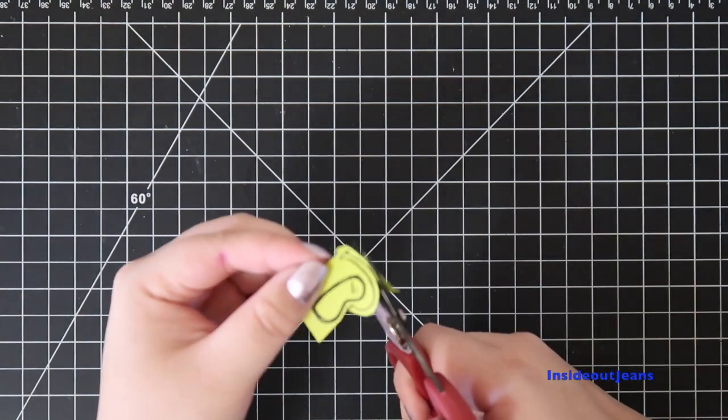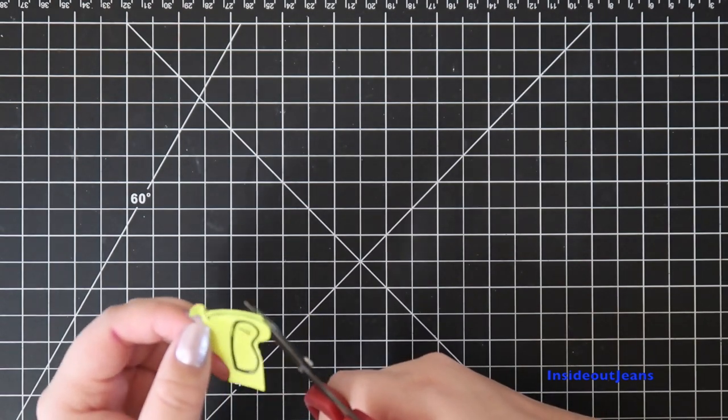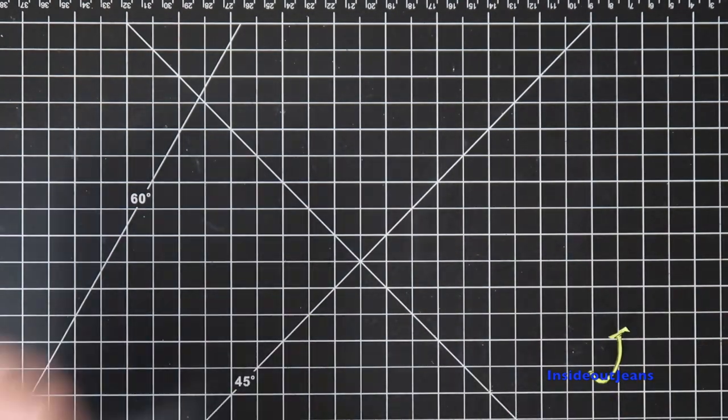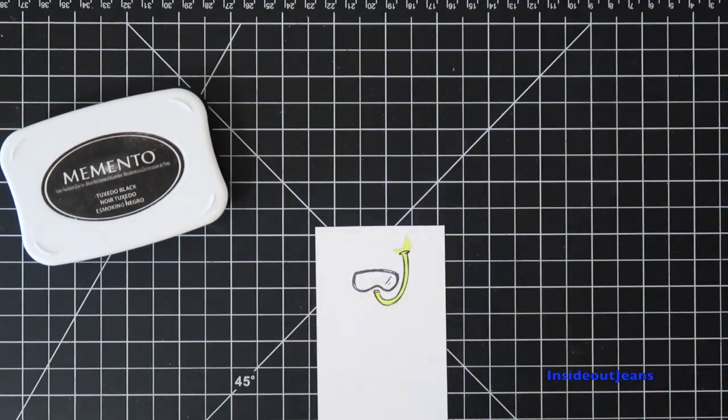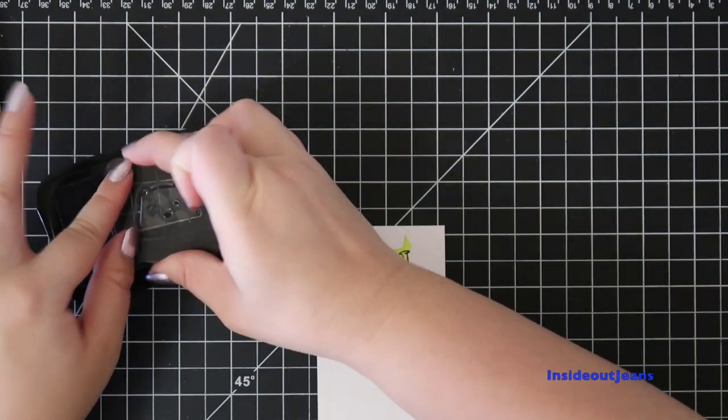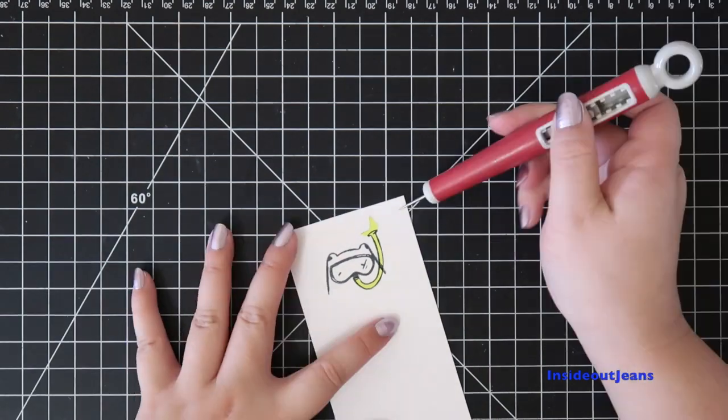I stamp out a mask of the scuba gear because I want the bear to look like he's wearing it, so I want him to be behind the gear. Once I cut that out, I'll stamp the bear.